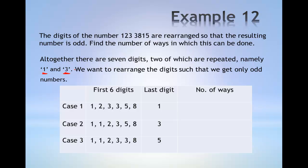The first case is the case where the last digit is 1. The number of ways to arrange the 7 digits with the last digit being 1 is given by permutating the first 6 digits, which gives 6 factorial, divided by 2 factorial, since there are 2 repeated digits of 3.